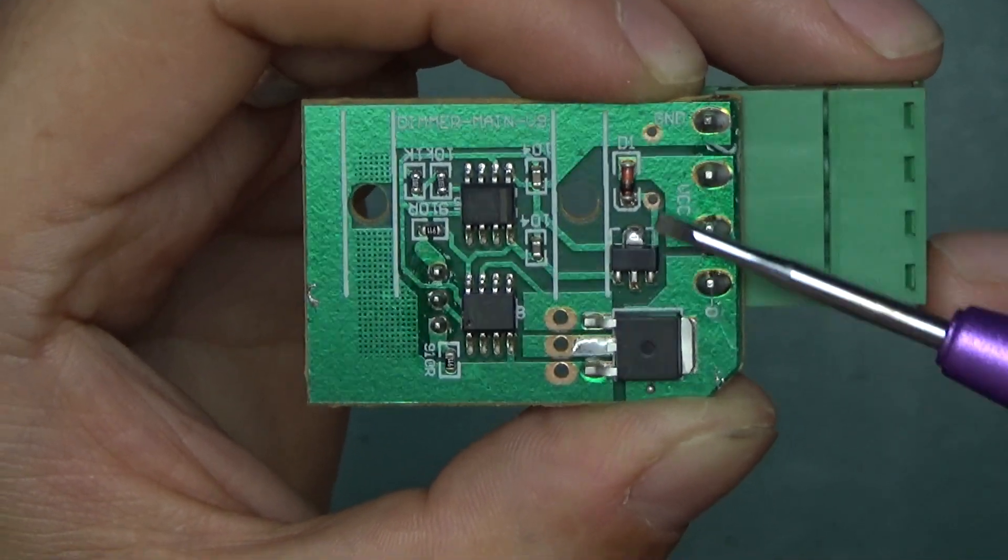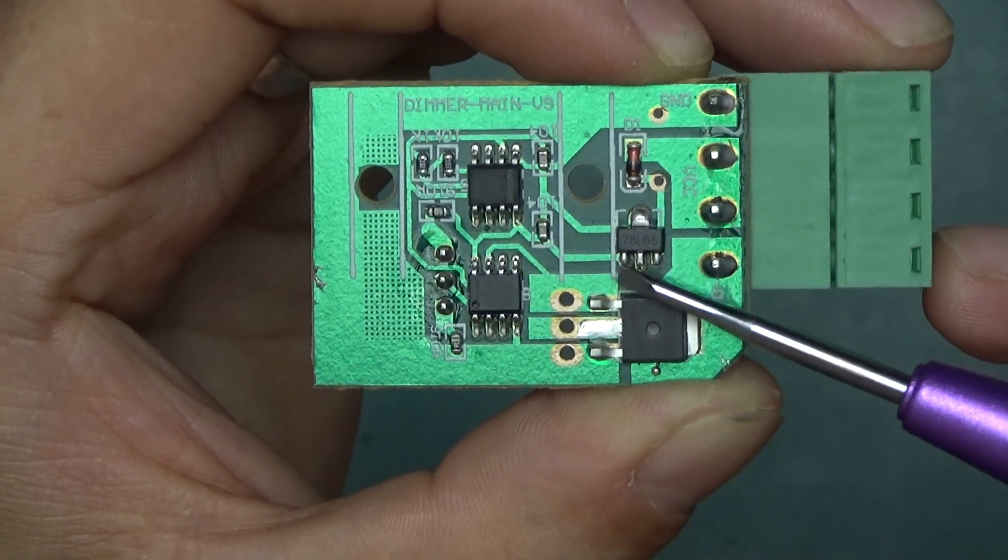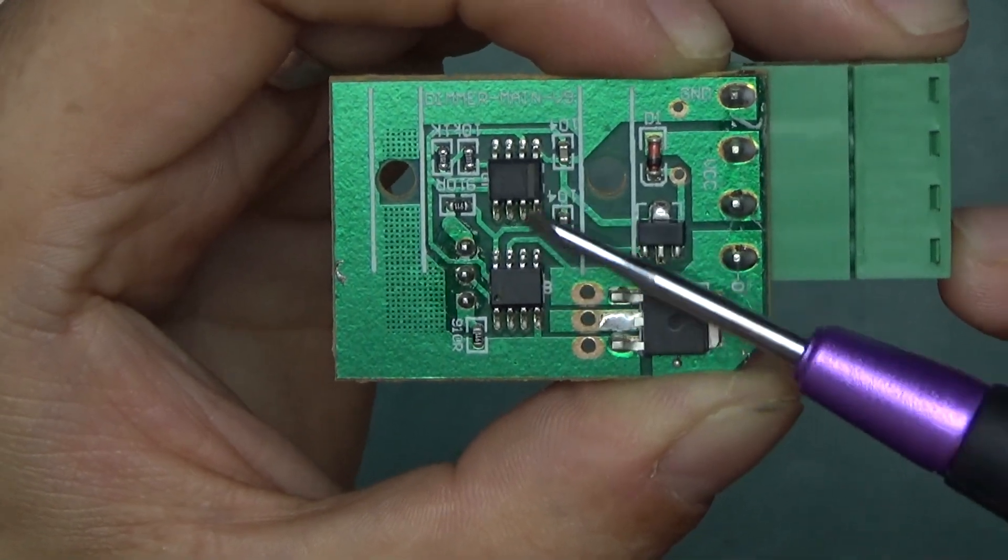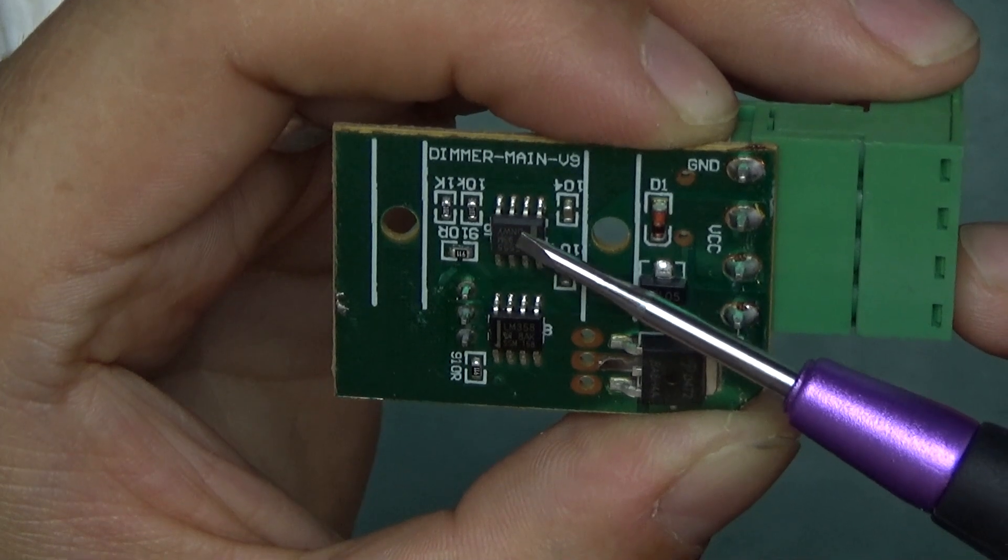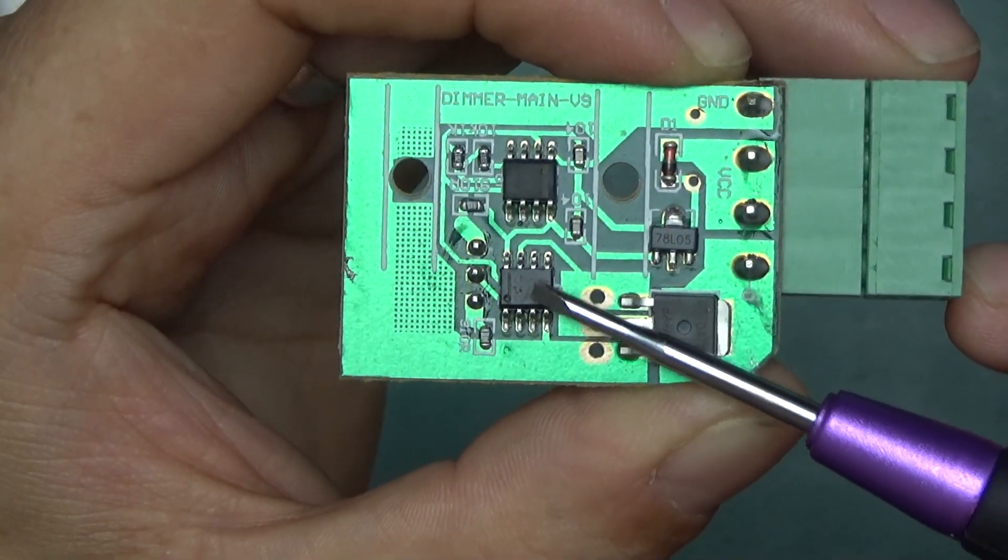General purpose diode here, and that goes to 78L05, 5V voltage regulator. And the 5V goes to those two ICs. And the top one, as you can probably see, it's a 555 timer. And the bottom one is a LM358 dual op-amp.